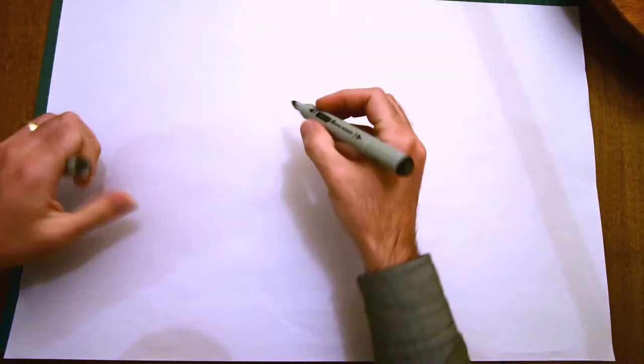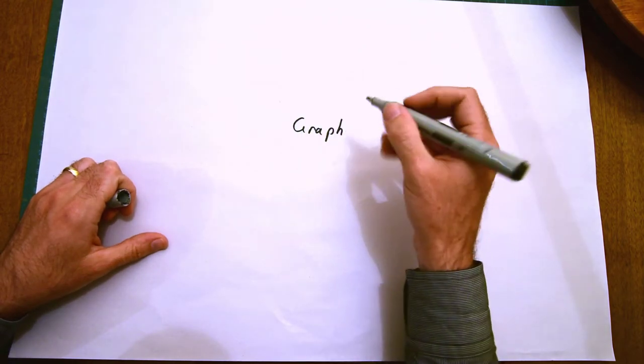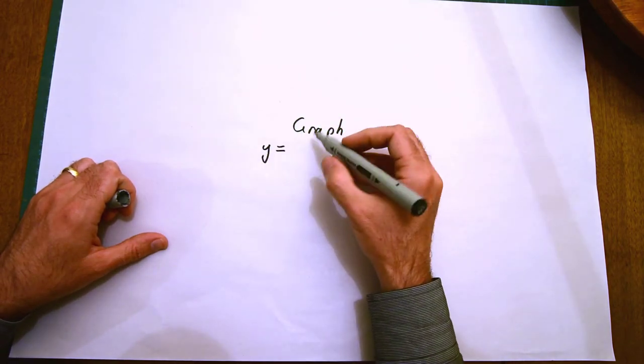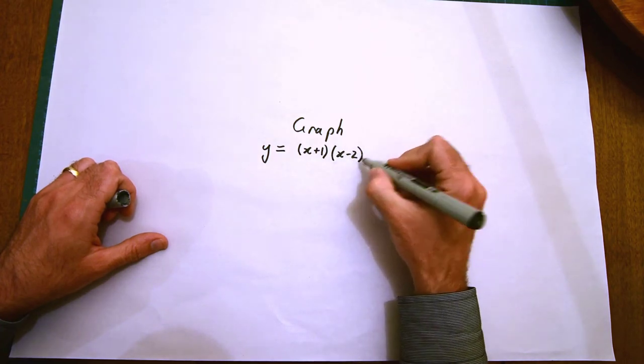Today we're looking at graphing cubic equations. We'll start with an equation that's already been factorized. This equation has one linear factor, x plus 1, and a repeated linear factor, x take 2, all squared.